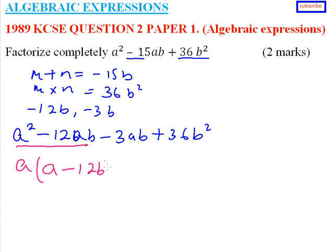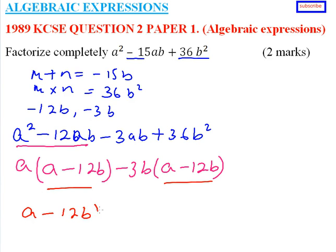We factor out what is common again, which is (a - 12b). So we have (a - 12b)(a - 3b). That is how you factorize this quadratic expression.